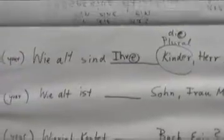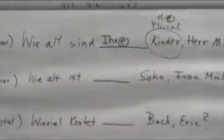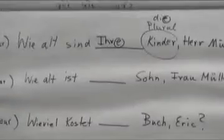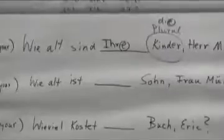Now let's look at the second sentence. Wie alt, how old is your son Mrs. Müller? Now we are talking to Mrs. Müller again, right? And again we have to use the formal address.